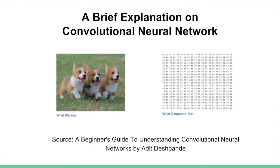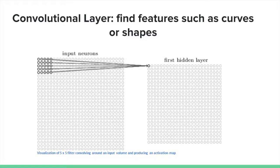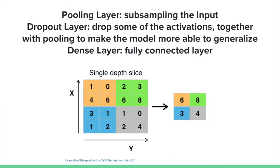For the machine learning model, we selected a Convolutional Neural Network, or CNN — a type of deep neural network that is good at dealing with images. A CNN consists of several different types of layers. The most important is a convolutional layer, which is like a moving window that scans through the image and finds certain features such as curves and shapes. A pooling layer basically subsamples the input. A dropout layer randomly drops some activations and helps the model generalize better. A dense layer is a fully connected layer as seen in ordinary neural networks.